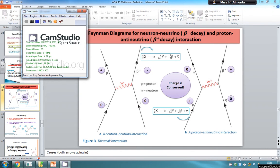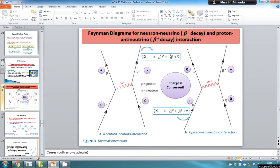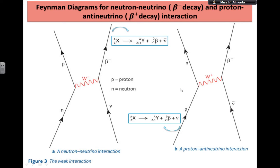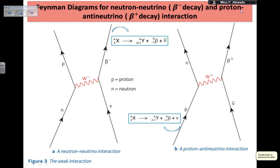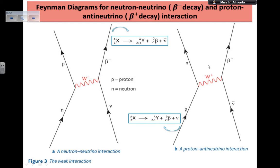Hey everyone. I'm going to continue explaining Feynman diagrams for some interactions. This is where I left off in part one. So Feynman diagrams for neutron-neutrino — the beta decay, which is the first one — and the proton anti-neutrino beta plus decay, or positron decay interaction. That's the second diagram.